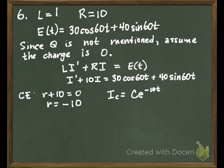Does that repeat anything that's in my forcing function? So we can choose for our particular solution just A cosine 60t plus B sine 60t.